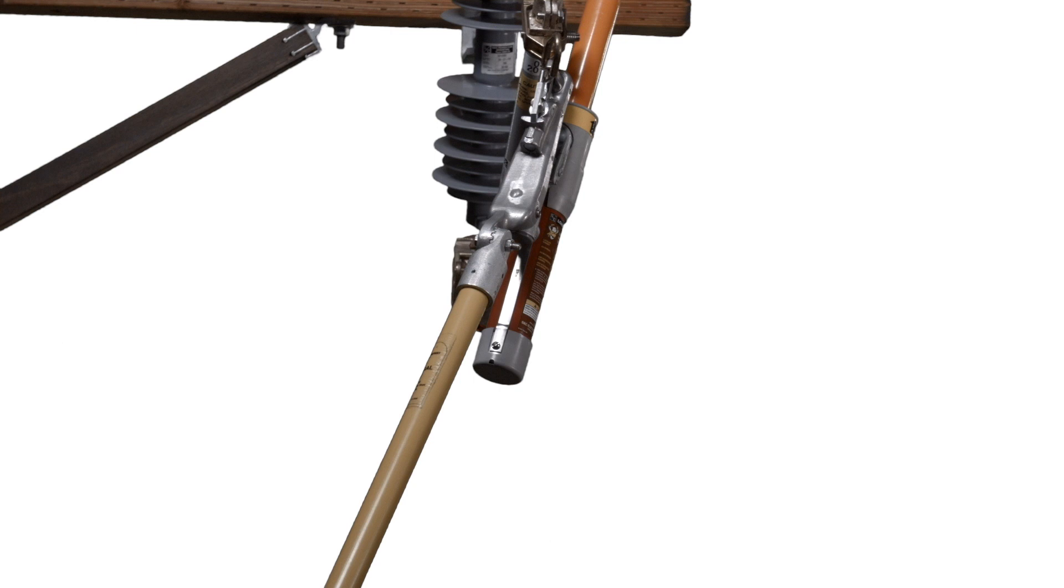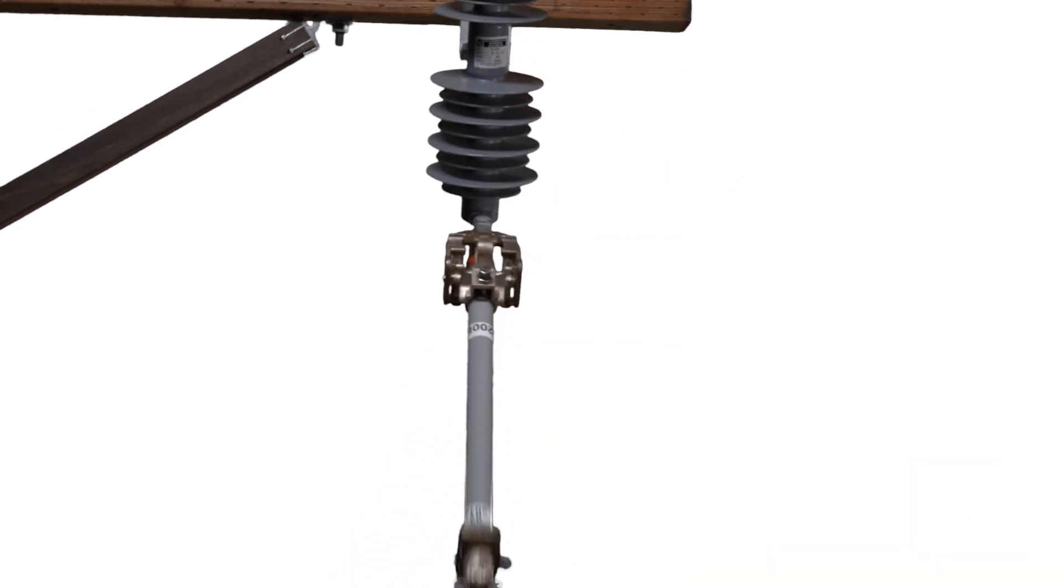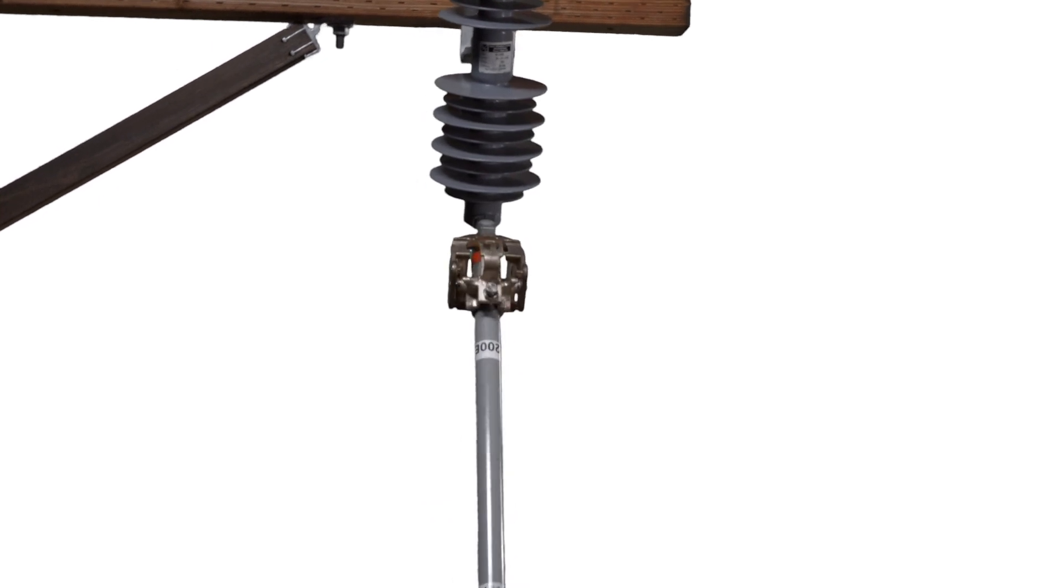Next, bring the fuse toward its fully open position. Remove the Loadbuster tool from the pull ring by turning the pole. This will deflect the pull ring latch to release the pull ring.